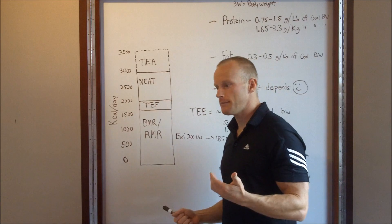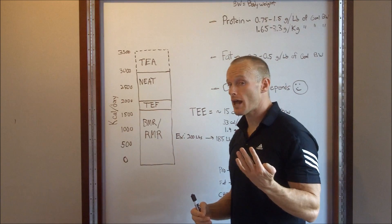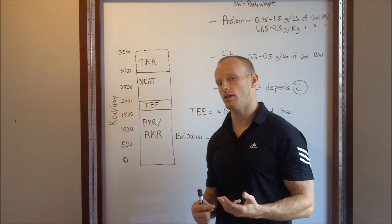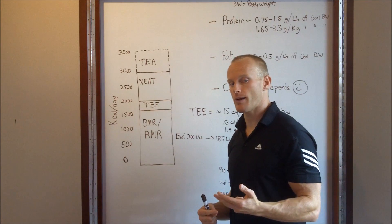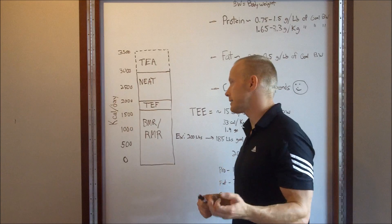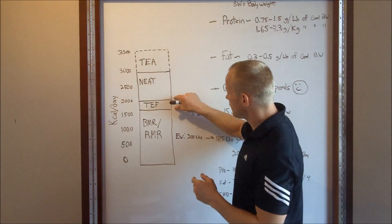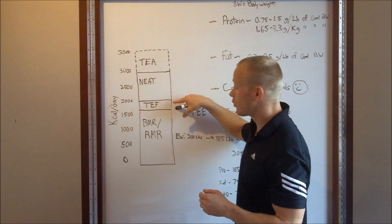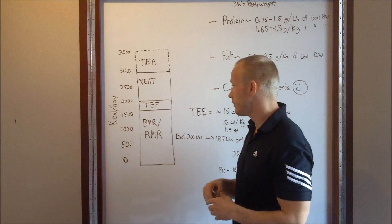TEF is the thermic effect of food. Quick example, you eat protein, you get 4 calories per gram, but you're really only going to realize about 3 calories per gram because there's a cost to extracting the energy from it. Protein has the highest thermic effect. So, it's pretty static. The more you eat, the more it goes up. The less you eat, the less it goes down.